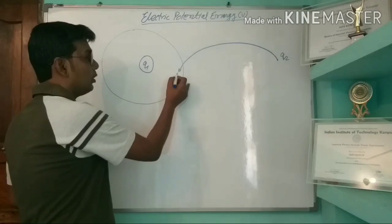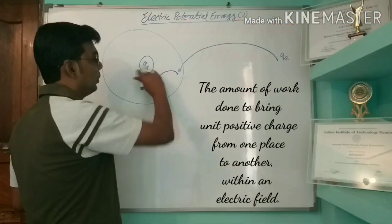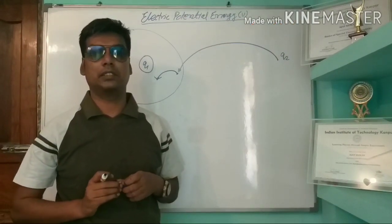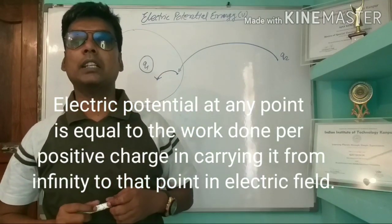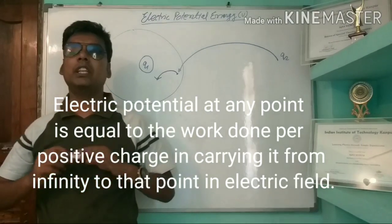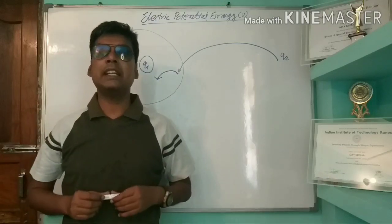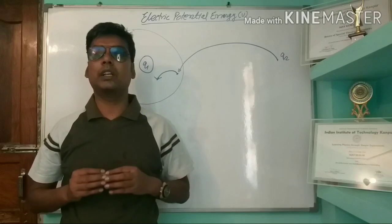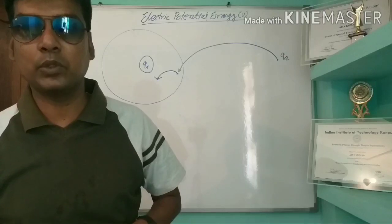The amount of work done to bring a unit positive charge from one place to another place within the electric field is called electric potential difference. Electric potential at any point is equal to the work done per unit positive charge in carrying it from infinity to that point in the electric field. It is the negative of the work done by the electric force of the configuration of the system. Now consider a system of two charges.